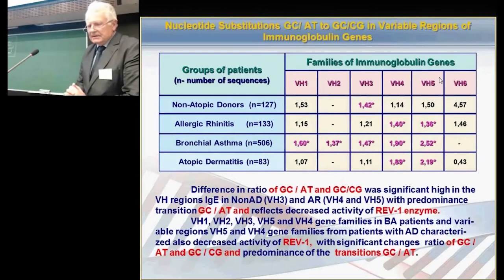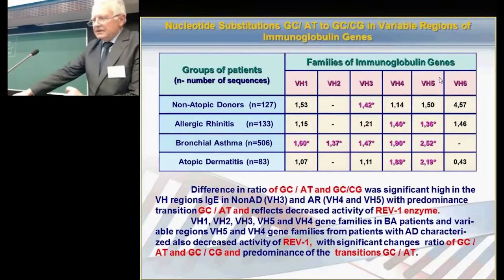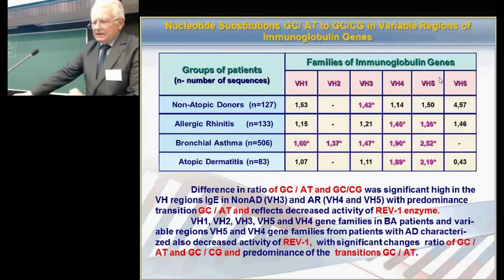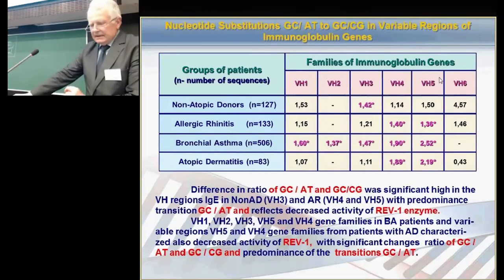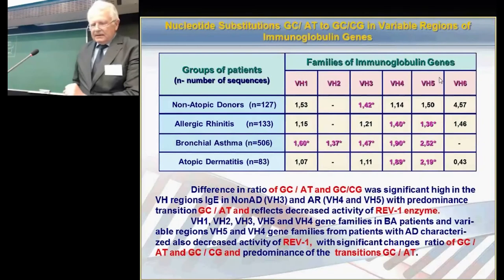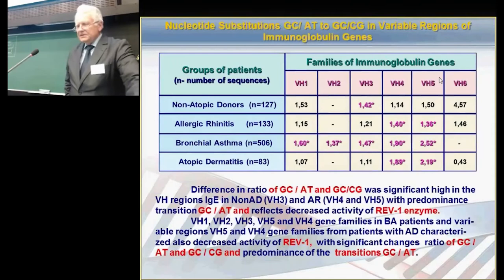We used methods for bioinformatics, PCR for amplification of VDJ genes, and biochemical determination of these enzymes in the serum of patients. The first part of this report is the evaluation of frequency of families of immunoglobulin genes in patients with allergic diseases. As you can see from this table, there are mostly seven families of genes found in patients with different allergic diseases. We used donors and patients with bronchial asthma and atopic dermatitis. These gene families are not equally represented between groups of patients — more frequently used genes are the second and fourth family of genes.